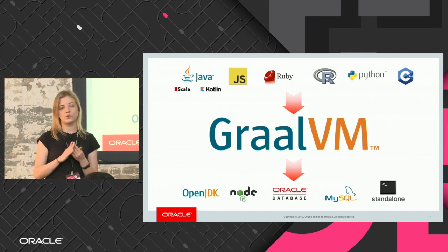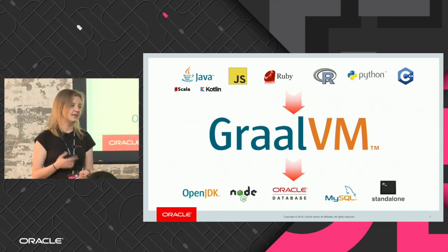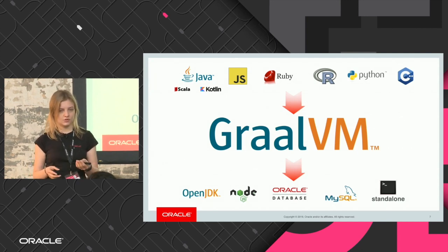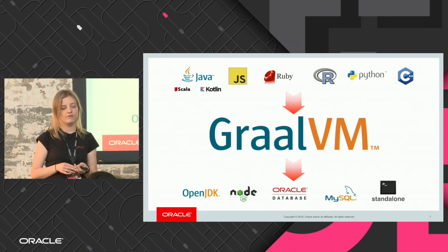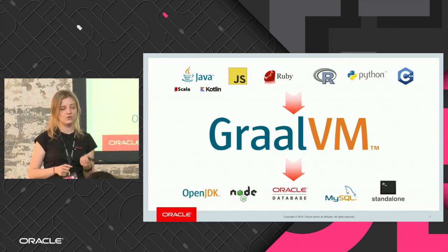We support JavaScript, Ruby, R, and Python. We also support native languages like C and C++ — basically, wherever you can compile down to LLVM bitcode, GraalVM can run it, because we have an LLVM bitcode interpreter in our GraalVM distribution. Talking about platforms, I already mentioned OpenJDK. It can also be used in Node.js, and another interesting use case is that you can use it in Oracle Database or in MySQL.